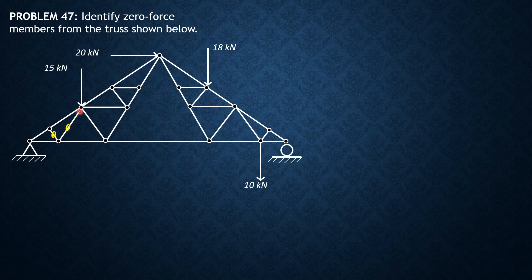We proceed to the next joint. There are four members plus a force — five total — so this situation does not qualify for Case 2. Looking further, we proceed to another joint where there are three members and two are collinear. Therefore, this member carries no force — that is zero.